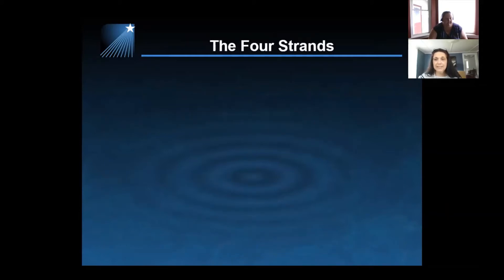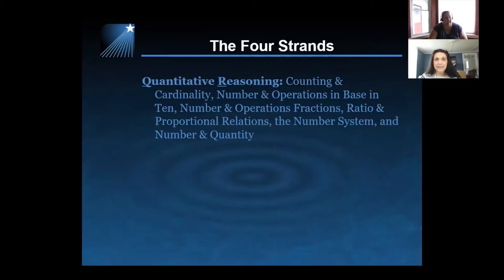As Jen had mentioned, in our revised Maine Learning Results we have four strands. The first strand is quantitative reasoning, denoted in our standards with QR. They encompass our domains of counting and cardinality, number and operations in base 10, number and operations with fractions, ratio and proportional relationships, the number system, and number and quantity.